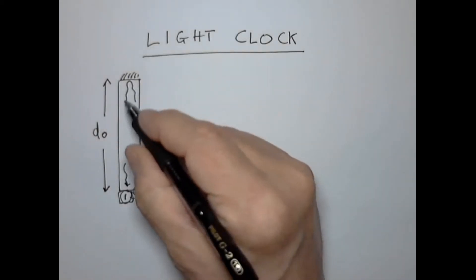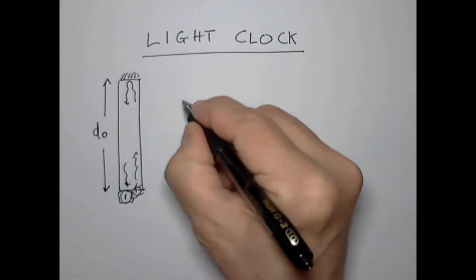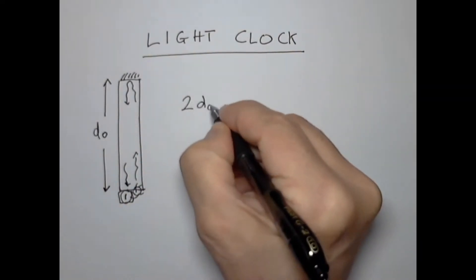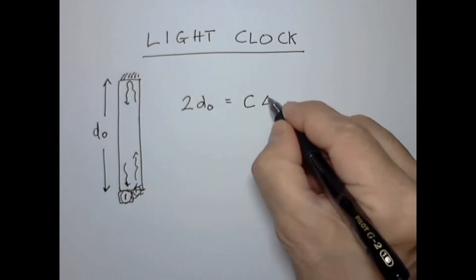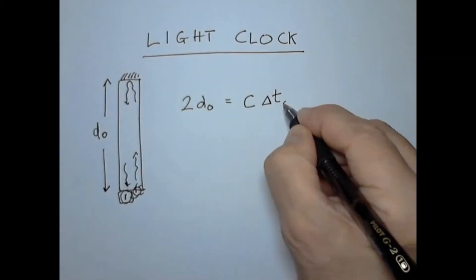The distance that the light travels there and back is 2d0 and that is equal to the speed of light times the time that it takes for the clock to make one tick.